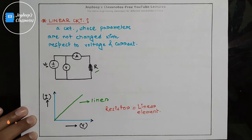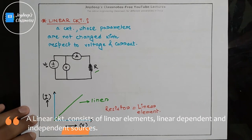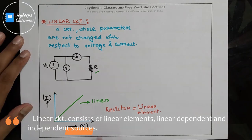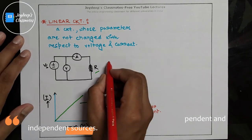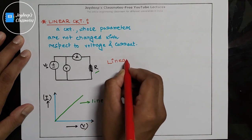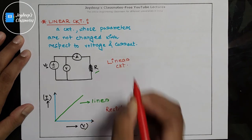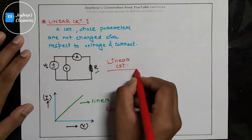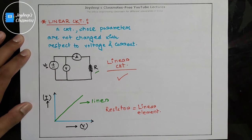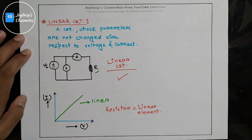And whenever in a circuit linear elements are present, then that circuit is considered to be a linear circuit. So this circuit is a linear circuit, and that means superposition theorem is applicable over here.